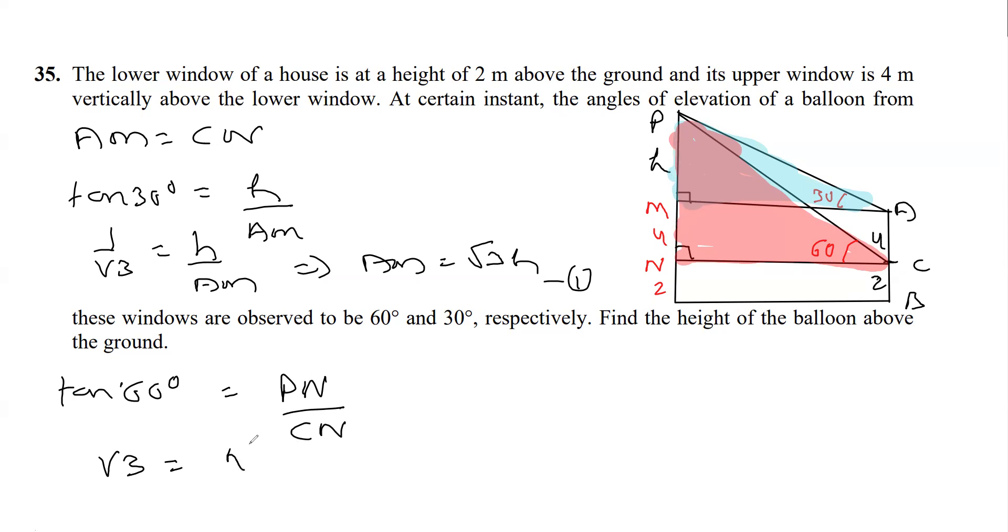It is H plus 4 and CN we don't know. So by cross multiplication, CN comes out to be H plus 4 over root 3.